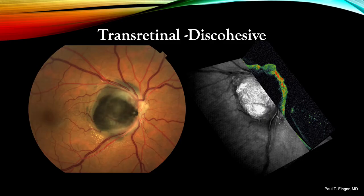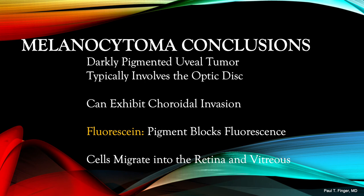Here we have a very interesting case. This patient requested enucleation for a symptomatic growing melanocytoma — he did not want a biopsy and wanted the eye removed. A clinical correlation between optical coherence tomography, histopathology, and color photography showed that the tumor was growing into the adjacent choroid, while clumps of melanocytoma were found transiting through the overlying retina and extending into the vitreous. In conclusion, the darkly pigmented melanocytoma typically involves the optic disc, can cause disc edema, and its cells can migrate through the overlying retina into the vitreous. Fluorescein angiography is blocked by the pigment, but an edematous optic nerve will hyperfluoresce.